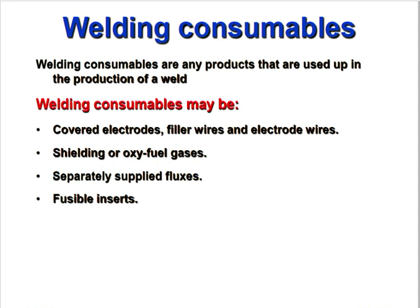What is a welding consumable? Any product that is used up in the production of a weld. When you are doing any production, at the time of welding we need welding consumables. Welding consumables may be covered electrodes, filler wire, flux, electrode wires, or shielding and oxy-fuel gases.